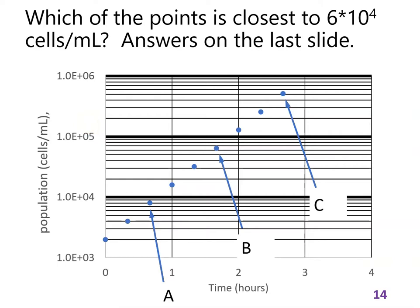So let's see, which of these is closest to 6×10^4 cells per milliliter? This says population cells per milliliter, so we're just trying to figure out which point on this is closest to 6×10^4, and then which of these dots is close to that. So how do we find 6×10^4? Well, remember each of these lines is a different value.